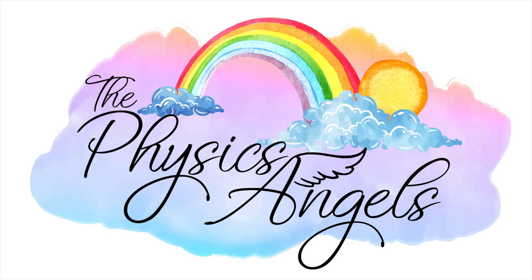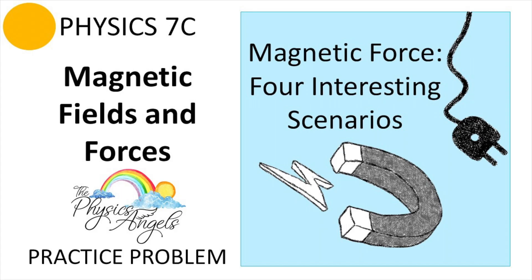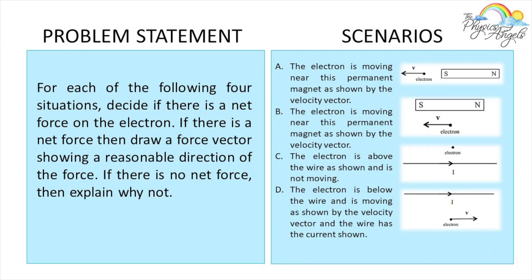Hello everybody, welcome back to our channel. In this episode we're going to be solving a Physics 7C practice problem on the topic of magnetic fields and forces. As usual, if you're finding this content helpful please make sure to leave a like — it really helps our channel. This is the problem we're going to be solving today: we have four different scenarios, each with an electron, and we need to figure out if there is a magnetic force and, if so, draw a force vector to show the direction of that force. Here is a sketch of our four scenarios.